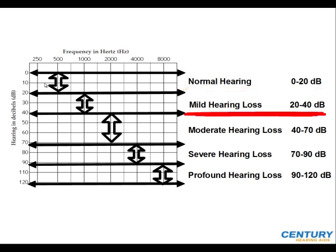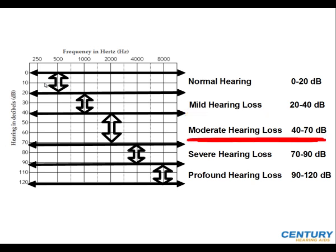If you have an X or zero that is between 20 and 40 decibels, you have mild hearing loss for that specific frequency. If you have an X or zero that's between 40 and 70 decibels, you have moderate hearing loss for that specific frequency. And it goes down to profound hearing loss, which is 90 to 120 decibels.